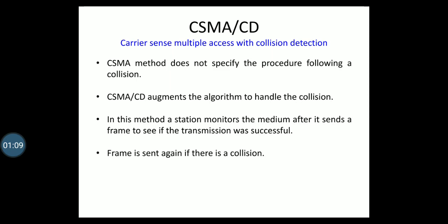To better understand CSMA/CD, we will look at the first bits transmitted by two stations involved in a collision. Although each station continues to send bits in the frame until it detects the collision, we will show what happens as the first bits collide — specifically where stations A and C are involved.